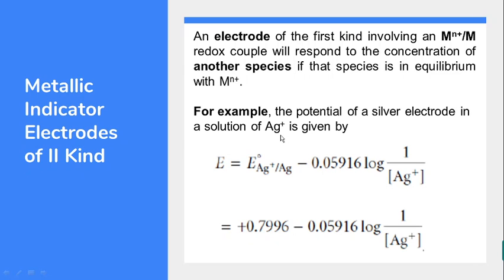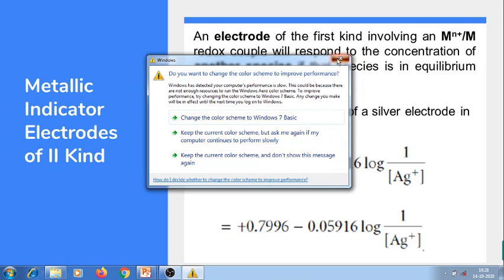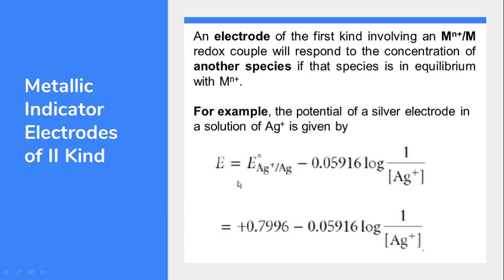For example, if a silver rod is dipped into silver nitrate solution, the silver electrode functions as a metallic indicator electrode of the first kind to determine the concentration of Ag+. The Nernst equation is written as: E = E° (Ag+/Ag) − 0.05916 × log(1/[Ag+]). The standard reduction potential E° for the Ag+/Ag couple is +0.7996 V. This equation is the Nernst equation for the metallic indicator electrode of the first kind.